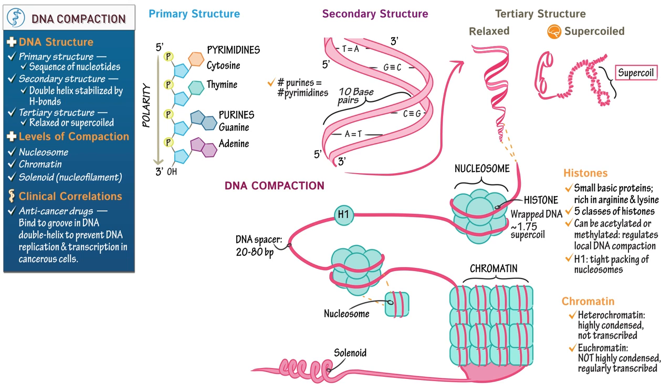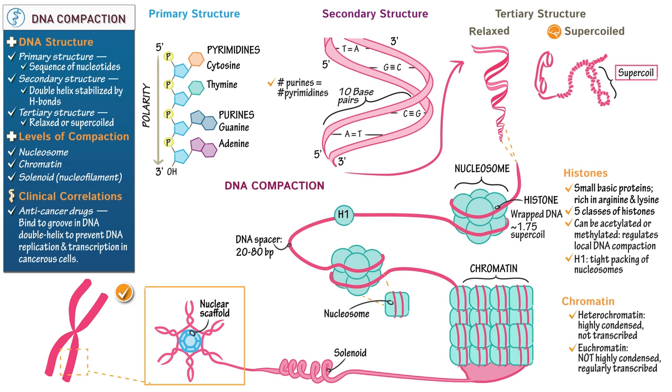Finally let's illustrate how DNA is compacted in preparation for cell division. Draw a circular nuclear scaffold protein, which is found in the nucleus. Show that nucleofilaments coil and form loops that anchor at the scaffold protein and radiate from its center. Illustrate that the resulting structure is a condensed chromosome, which comprises two sister chromatids that join at a centromere.